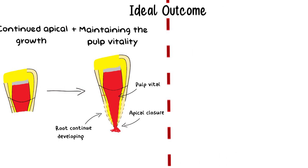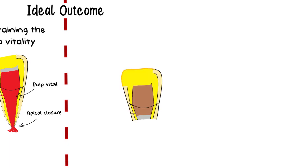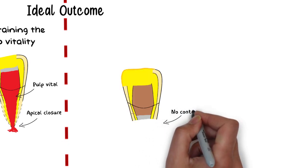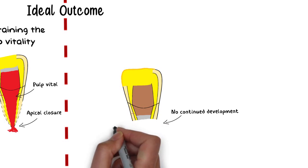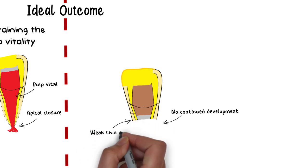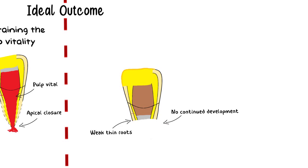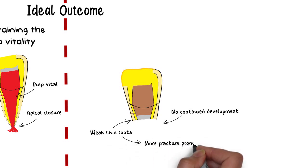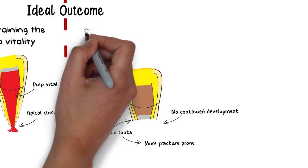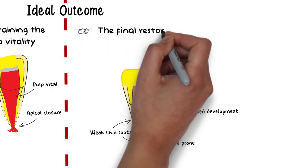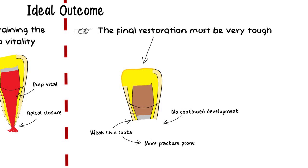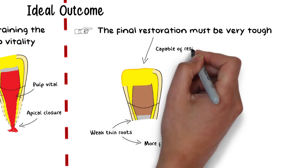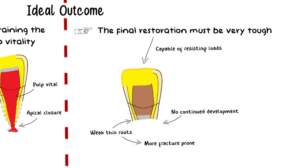In the case of Apexification, the pulp is no longer vital, so there will not be any continued root development. Hence, the tooth will have weak roots with thin dentine walls and will therefore be more prone to fracture during the masticatory life of the tooth. Therefore, the final restoration after Apexification is very crucial — it should be made very tough and resilient and capable of resisting the high masticatory loads during the life of the tooth.